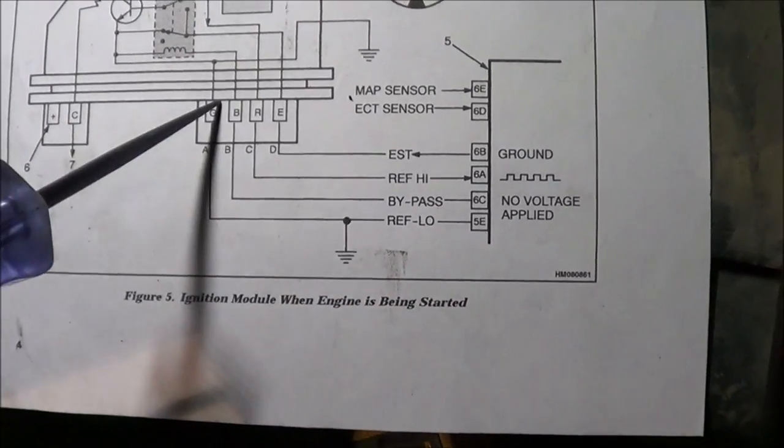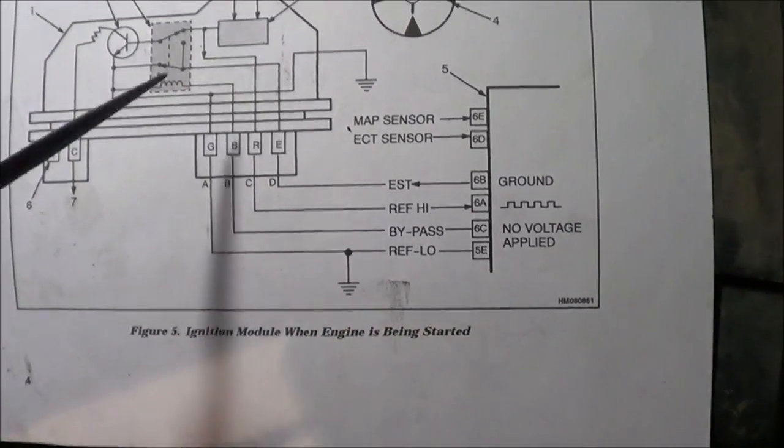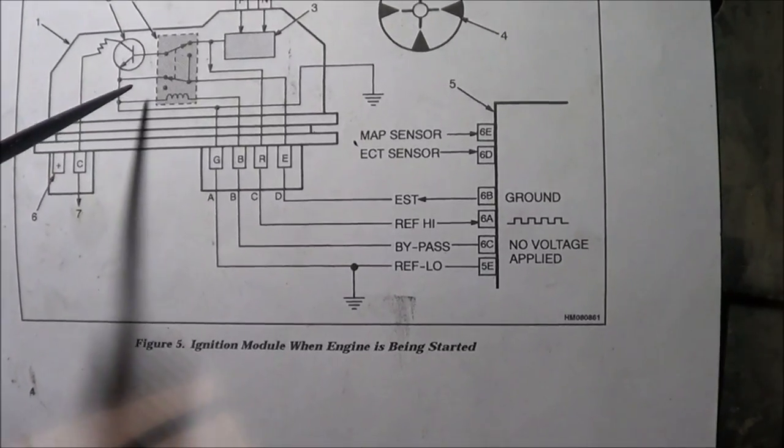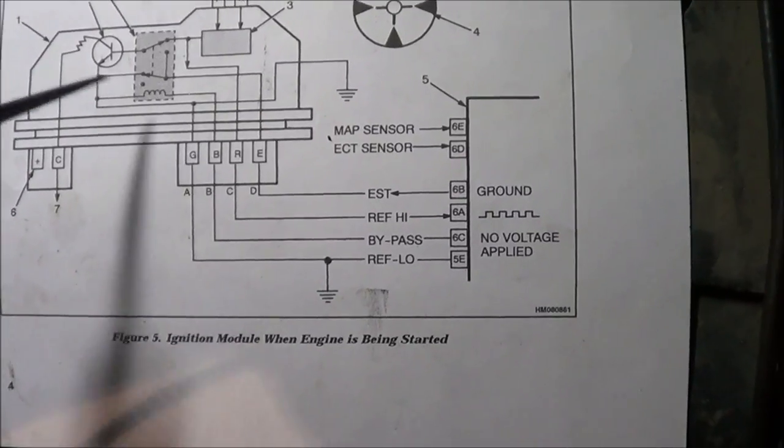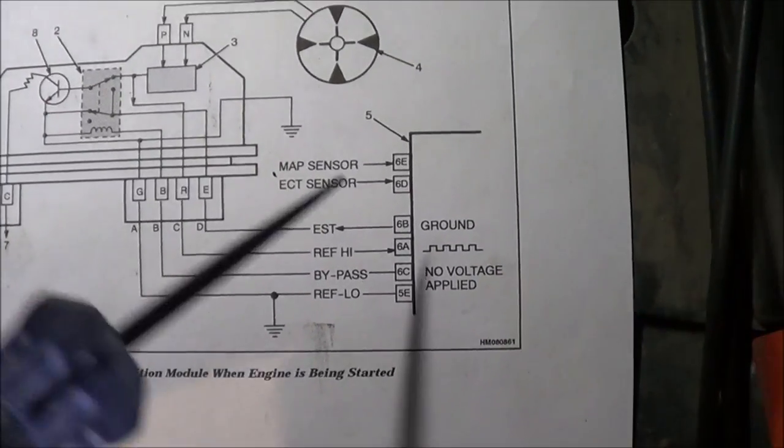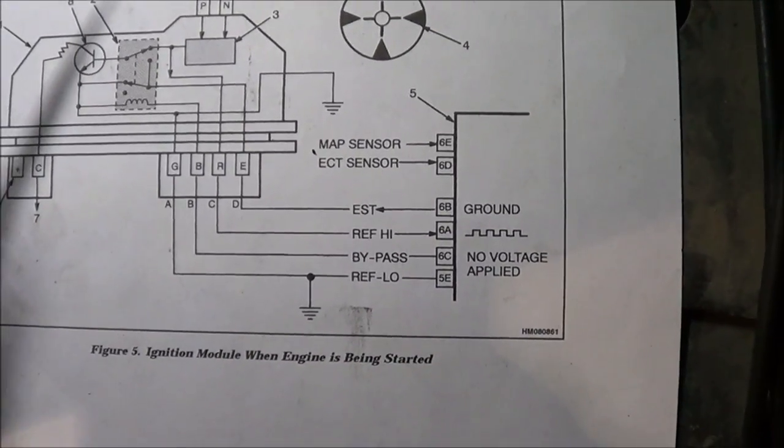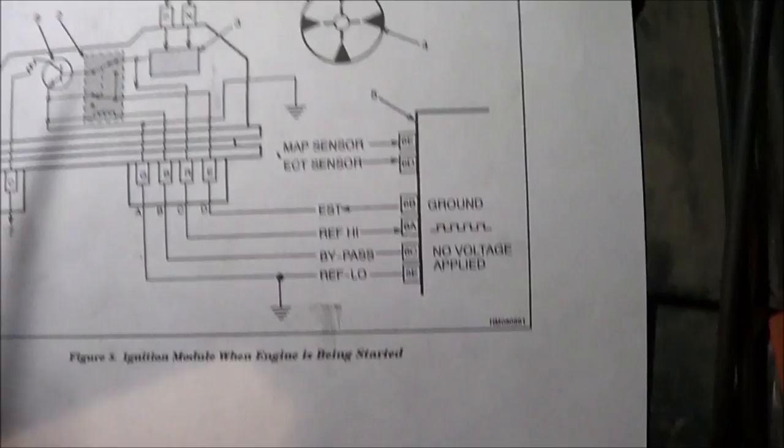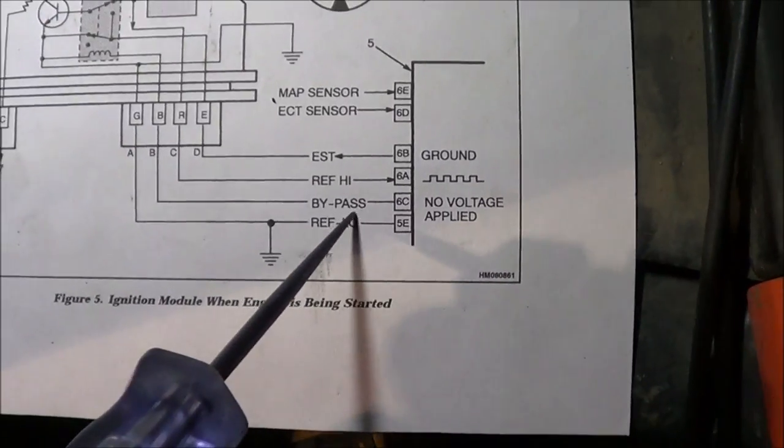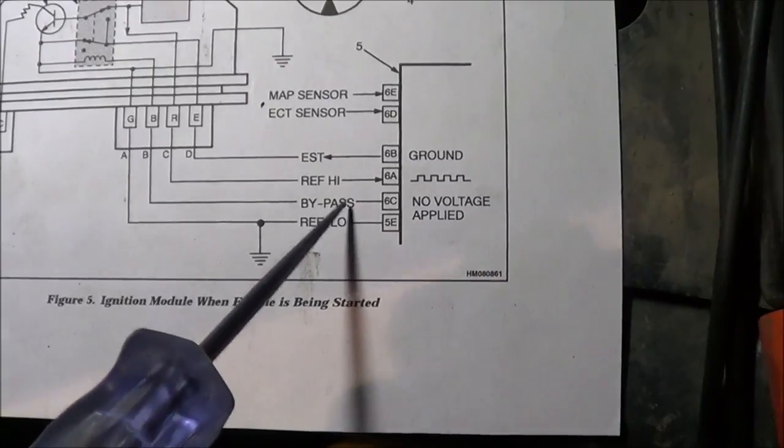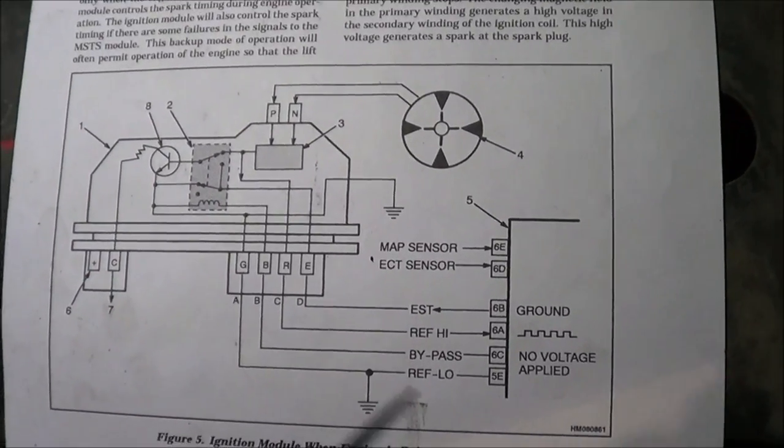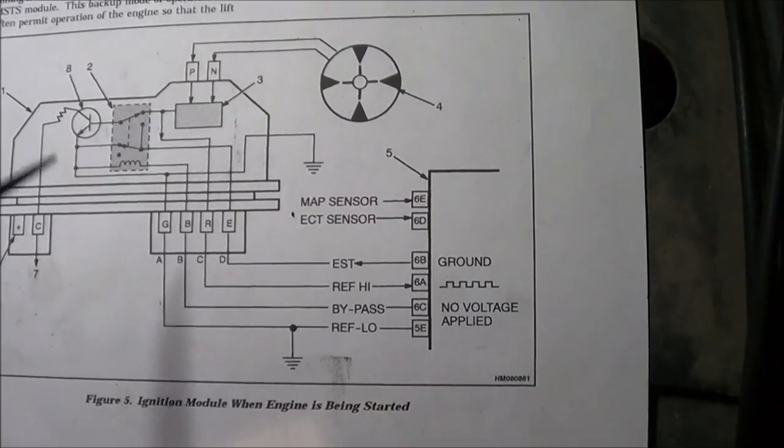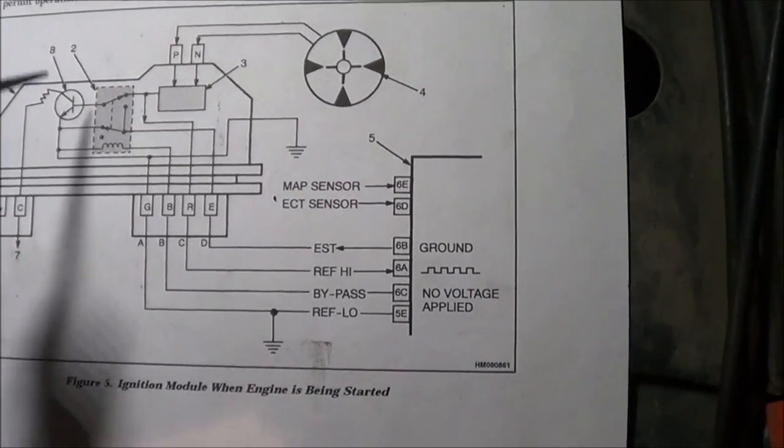Remember I said earlier that the ignition module is in control at startup until it gets a bypass signal from the ECM to transfer that spark control directly to the ECM. What I'm going to show you by using an oscilloscope is that that bypass signal should not be there at startup.